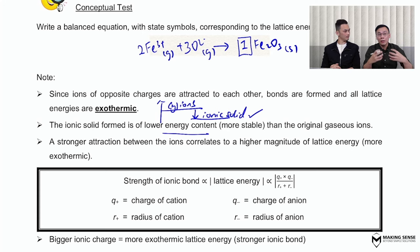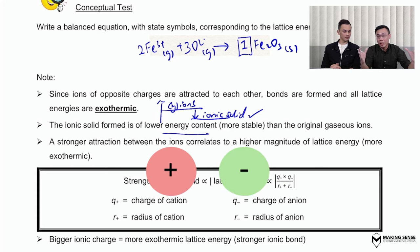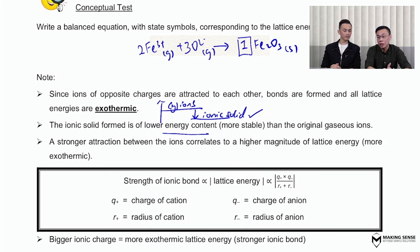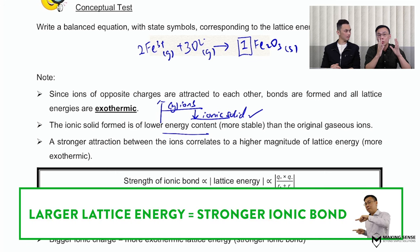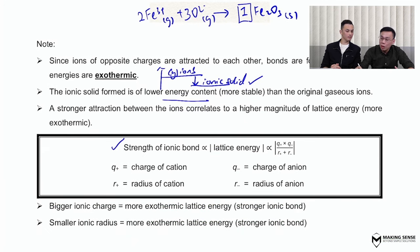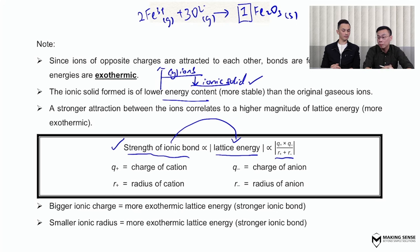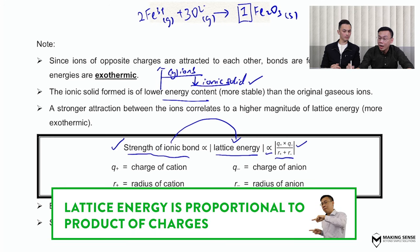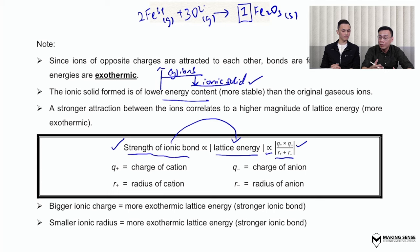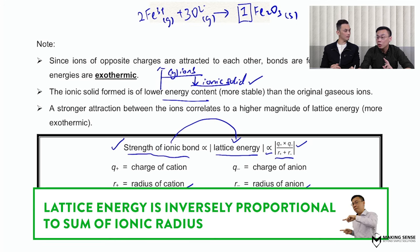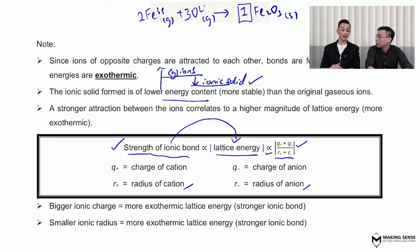A larger magnitude of lattice energy means the attraction between ions is stronger, and hence the ionic bonds are stronger. The strength of the ionic bond is proportional to the magnitude of the lattice energy, which is expressed in a simple formula. In this formula, q represents charge — q⁺ is the charge of the cation, q⁻ is the charge of the anion — and the magnitude of lattice energy is proportional to the product of the charges. r represents the radius of the ion — r⁺ is the radius of the cation, r⁻ is the radius of the anion — and the magnitude of lattice energy is inversely proportional to the sum of ionic radii.